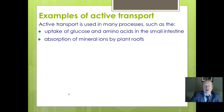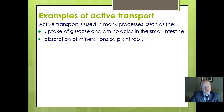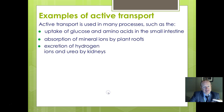Another example is absorption of mineral ions by plant roots. The watery solution around plants in soil is often very low in mineral content, yet the mineral content might already be higher inside the plant. Even so, the plant still needs to absorb as many minerals as it can, so it uses active transport to concentrate the minerals even further inside.